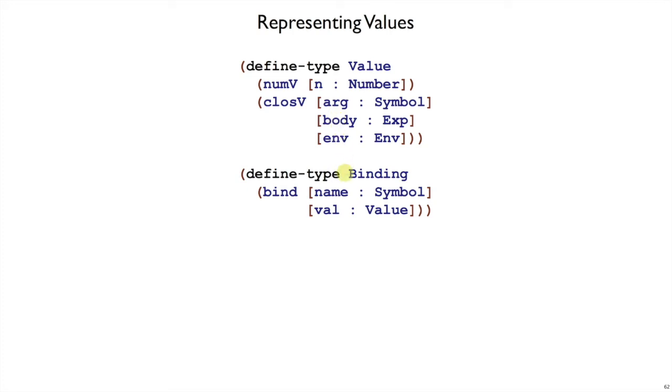An environment, remember we had binding, that was binding a name to a number before, now we bind a name to a value. We replace number type with value type, where we have numbers that are num v and close v.